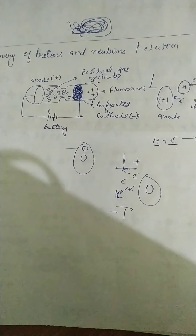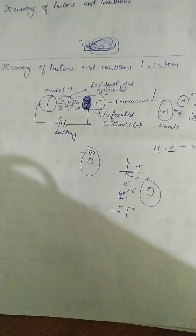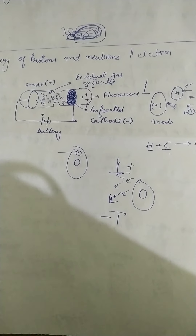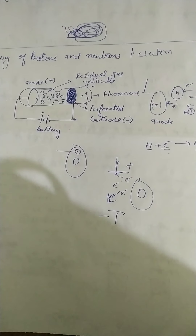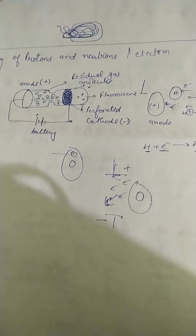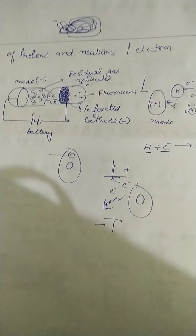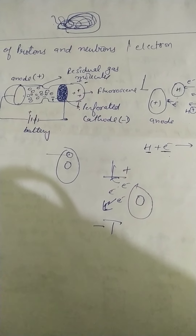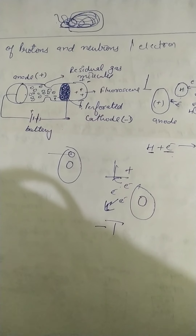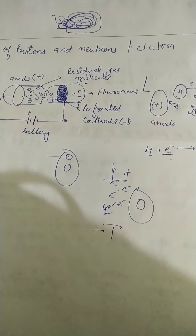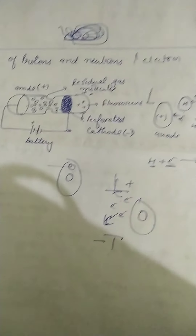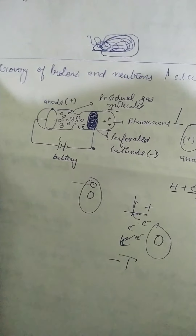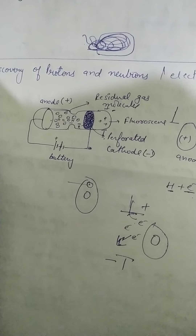Good morning students. We have started our chapter on the structure of the atom, and we have read two topics on how the discovery of electrons, protons, and neutrons took place. So I am going to recall both experiments in a single experiment — means how both electrons and protons are generated.